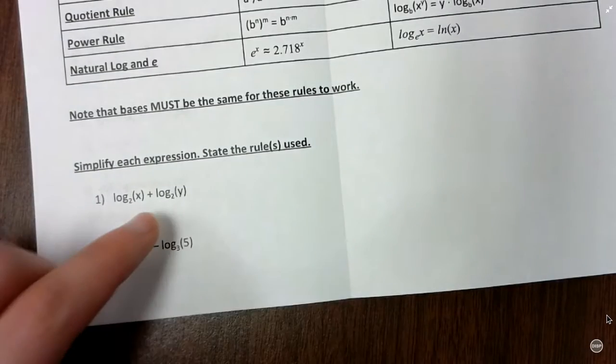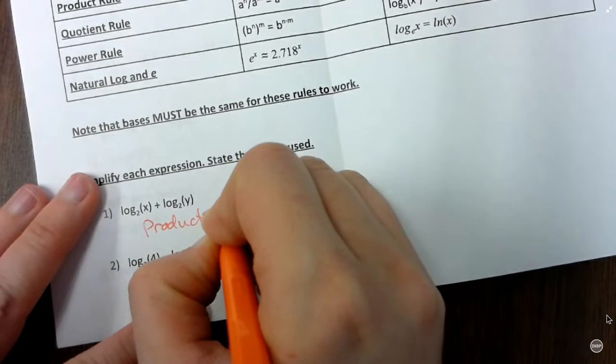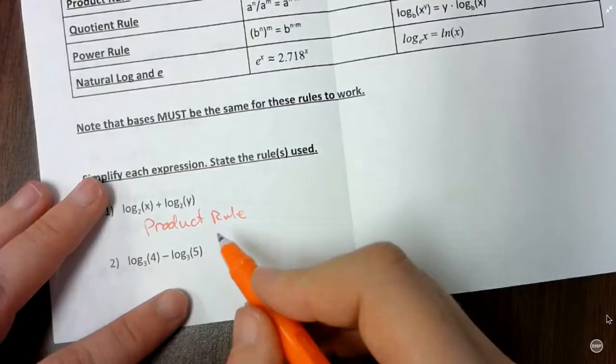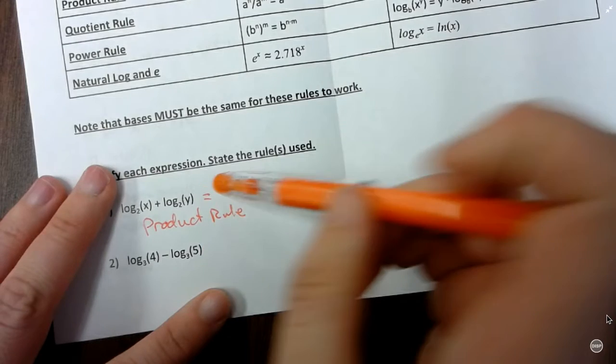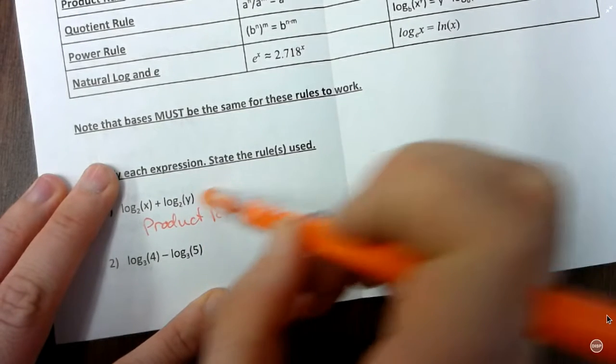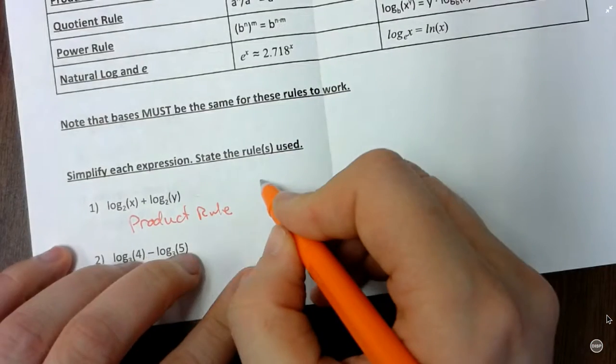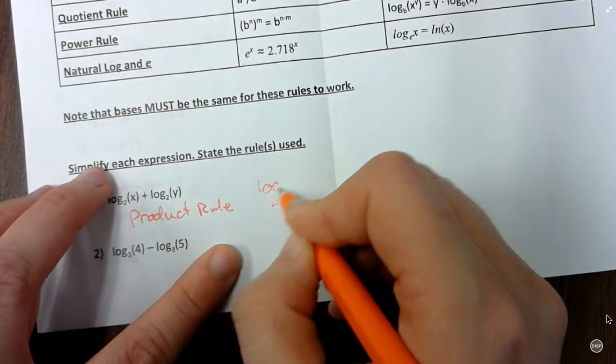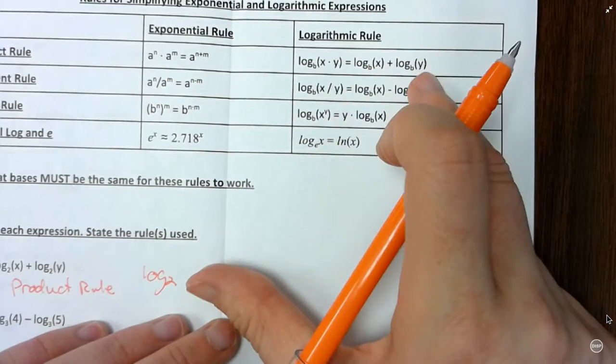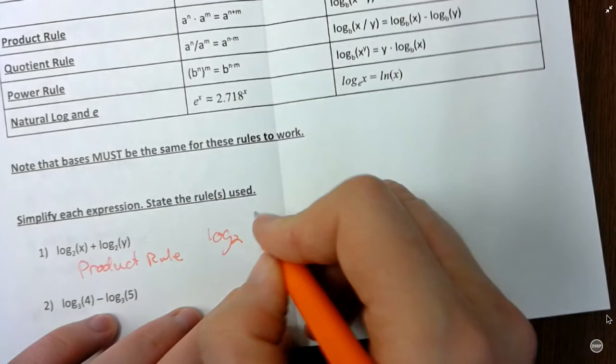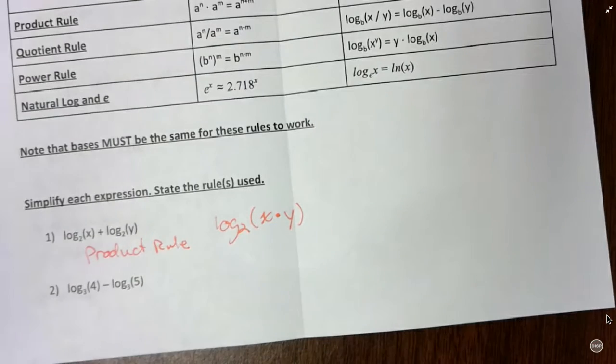So for number one, I'm going to be using product rule. So to put these together, I still have log base 2. And then I'm just going to do what the rule shows. I'm going to take my two arguments, the x and y, and multiply them together. So log base 2 of x times y. And that's it. Then they're combined into one log.